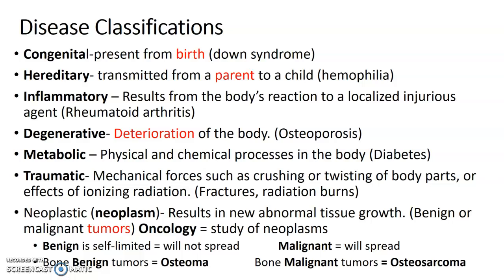Disease classification types to know: congenital means present from birth; hereditary is transmitted from parent; inflammatory makes sense. Degenerative is deterioration — osteoporosis is an example. Metabolic — diabetes is an example. Traumatic includes fractures and burns. Neoplastic, or neoplasm, results in new abnormal tissue growth. They can be benign or malignant tumors. Oncology is the study of neoplasms.